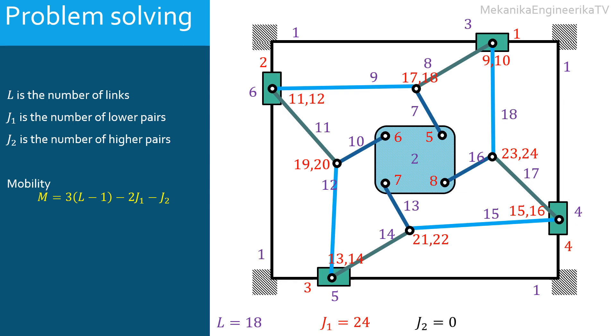The mechanism does not involve any higher kinematic pair, hence, J2 is equal to 0.